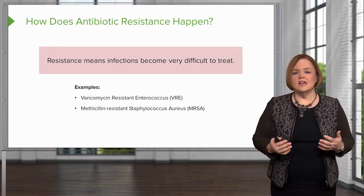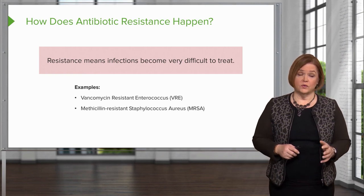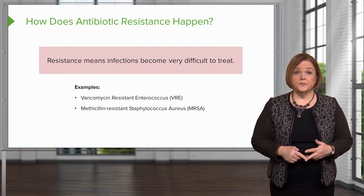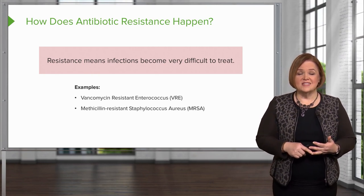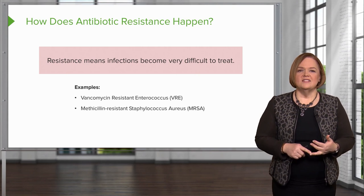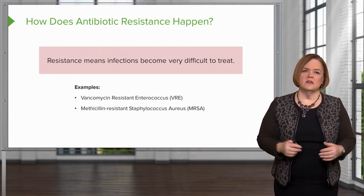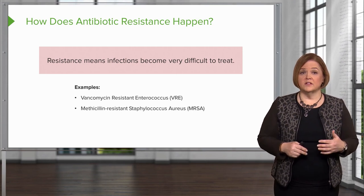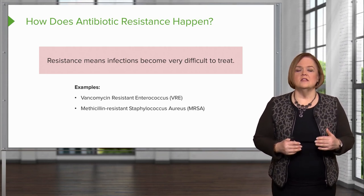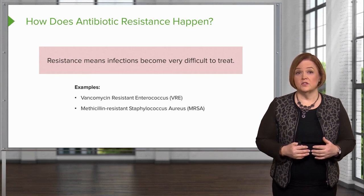So how does antibiotic resistance happen? The term antibiotic resistance means you've got an infection that becomes very, very difficult to treat. In your clinical rotations, two that you are likely to see are VRE and MRSA. VRE stands for vancomycin-resistant enterococcus — vancomycin is the drug, and resistant enterococcus means we used to be able to treat that bug with vancomycin, but now it's become resistant. Methicillin-resistant Staphylococcus aureus, or MRSA, means that staphylococcus is now resistant to methicillin. So MRSA and VRE are two really strong bugs that have become resistant to the drugs that used to treat them.